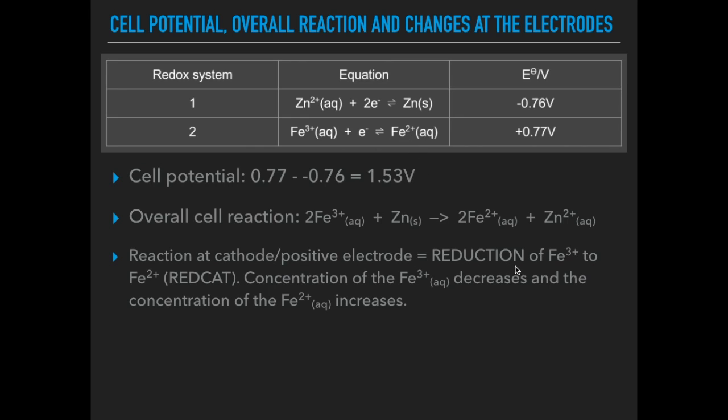So it's gaining electrons. And so Fe³⁺ is reduced to Fe²⁺. And I use the acronym REDCAT just to remember what happens at the cathode. So what's going to happen? The concentration of the Fe³⁺ ions will decrease and the Fe²⁺ concentration will increase.